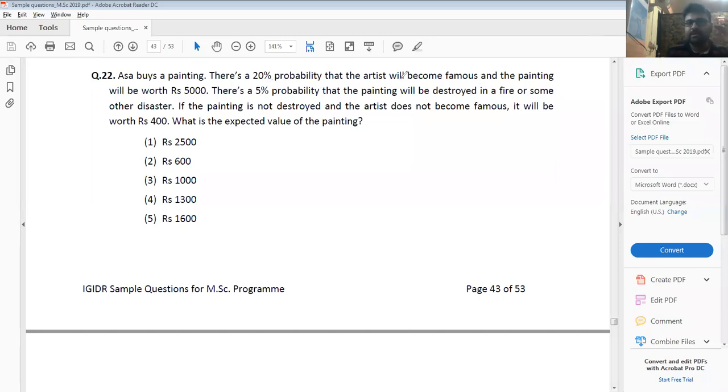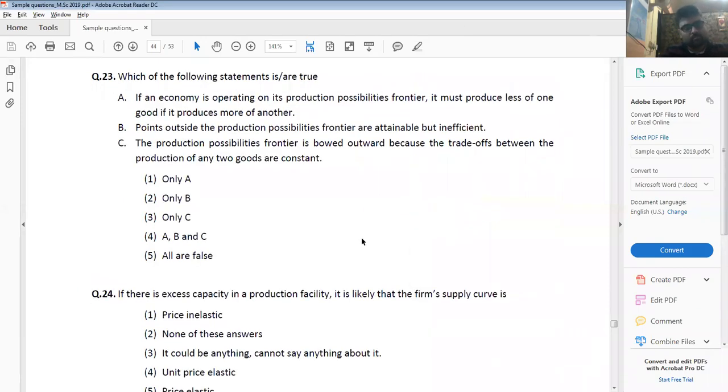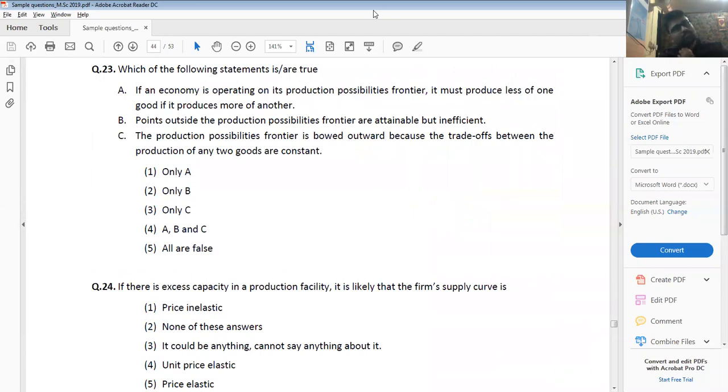Question 22. There's a 20% probability that the artist will become famous and the painting will be worth 5,000. 5% probability it will be destroyed in a fire or some disaster. If not destroyed, it will be worth 400. 400 multiplied by, into 1 by 5, 20% probability.